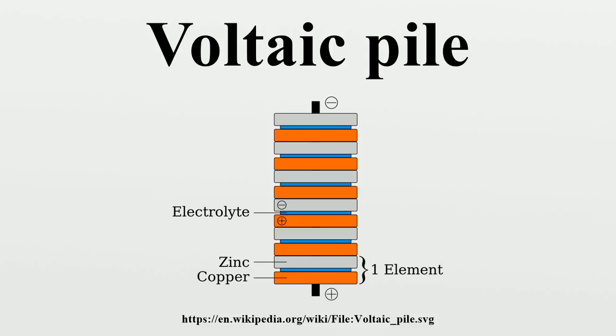Because Volta believed that the electromotive force occurred at the contact between the two metals, Volta's Piles had a different design than the modern design. His piles had one extra disk of copper at the top, in contact with the zinc, and one extra disk of zinc at the bottom, in contact with the copper.